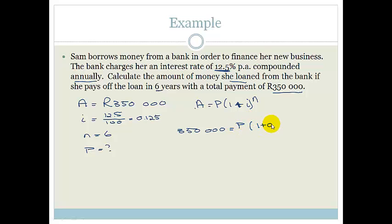Therefore, P equals 350,000 divided by 1.125 to the power of 6. So let's pop that into our calculator.